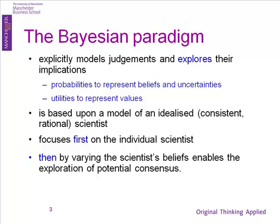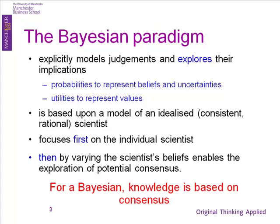If the answers you get depend very much on where you start from, then the data's not strong enough to bring about consensus. So Bayesian statistics is about exploring knowledge and understanding by looking for consensus rather than some objective proof. That's the key to what goes on in the Bayesian analysis — it's about exploring consensus as much as anything else.